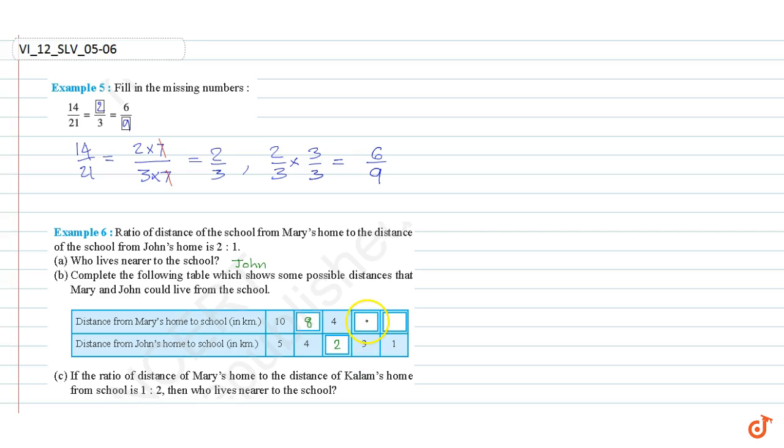Here it is 3. 6 is to 3 is 2 is to 1. Here it is 1. Then here it should be 1, 2.